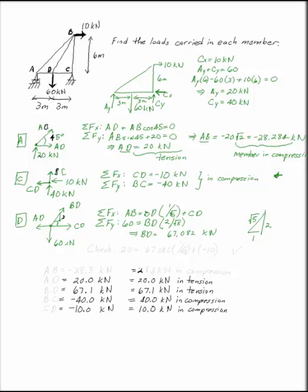Now I only use the sum of the forces in Y. I can use the sum of the forces in X to check what I'm doing. AB I know is 20, BD I just solved for was 67.082 times 1 over the square root of 5, and CD I had solved for before was negative 10. And does that in fact work? It does.